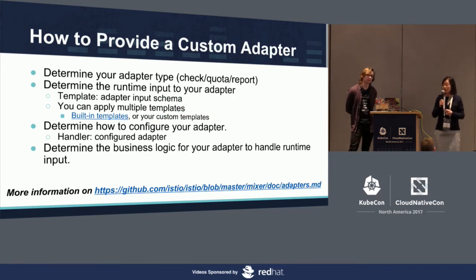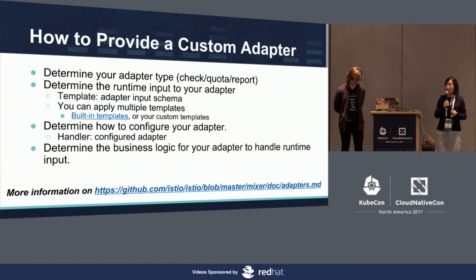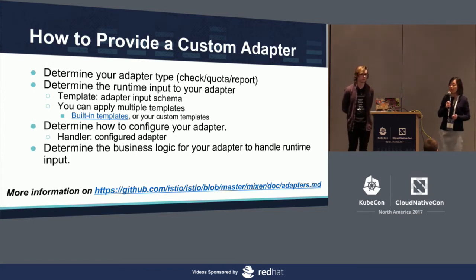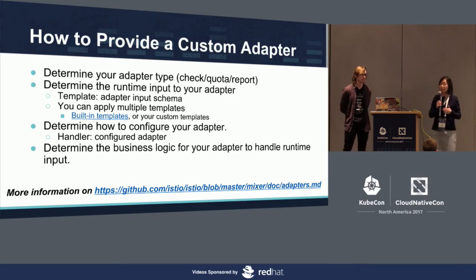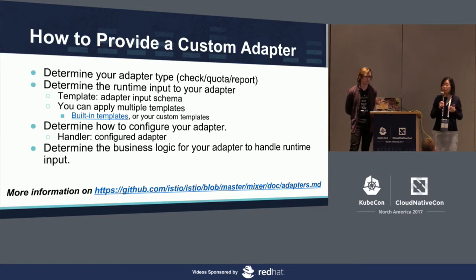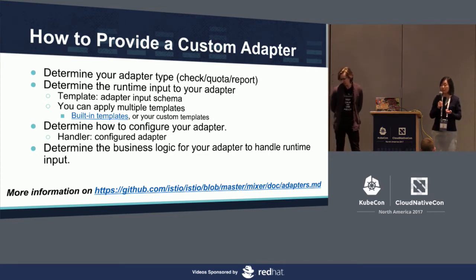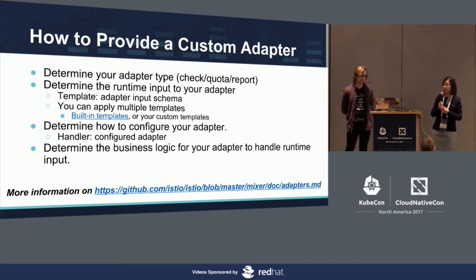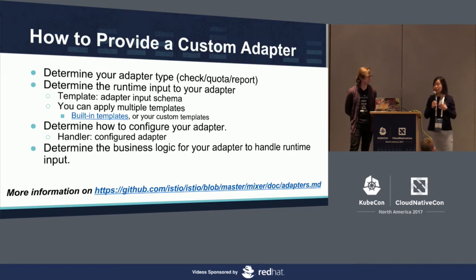In order to provide a custom adapter, you need to determine several things. First, determine your adapter type: whether it's doing a pre-condition check, quota check, or telemetry reporting. Second, determine the runtime input for your adapter. In Mixer, we use templates to define the schema for mapping attributes to adapter input. You can apply multiple templates for a single adapter, and you can either use built-in templates or provide custom ones. Next, determine how to configure your adapter — the parameters it takes. A configured instance of an adapter is called a handler. Lastly, determine the business logic for your adapter to handle the runtime input.